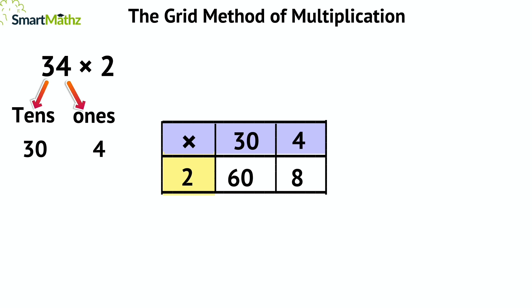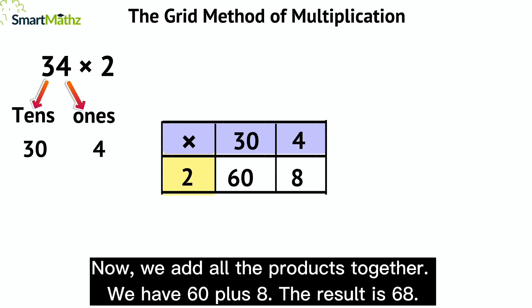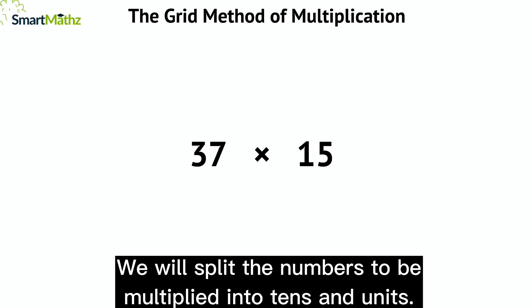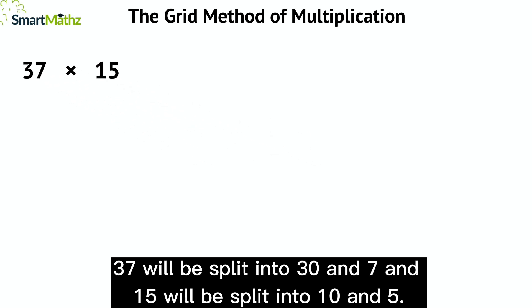Now we add all the products together. We have 60 plus 8. The result is 68. Let's try this too: 37 times 15. We will split the numbers to be multiplied into tens and units.